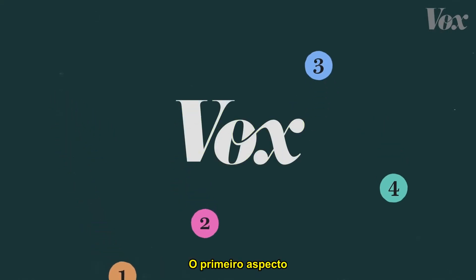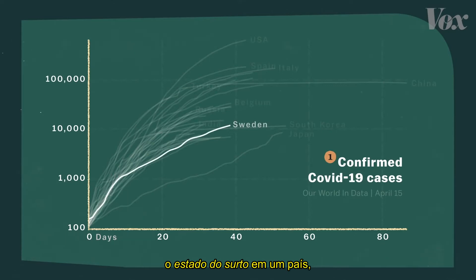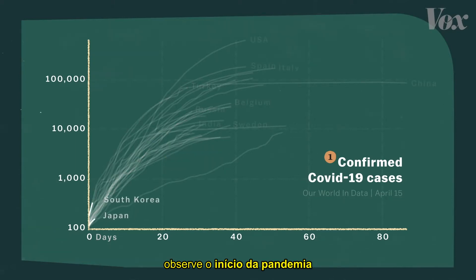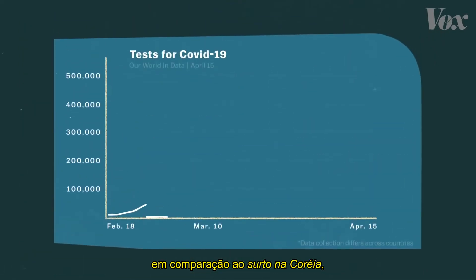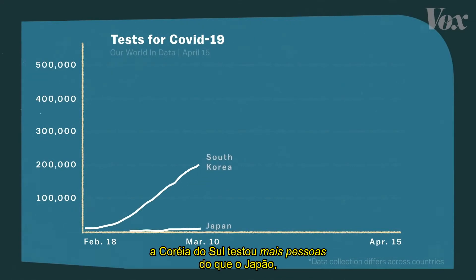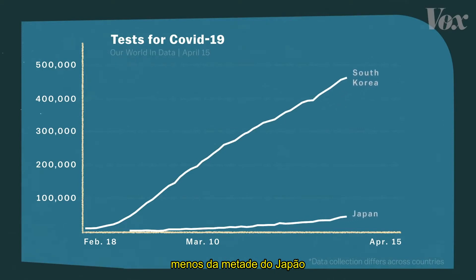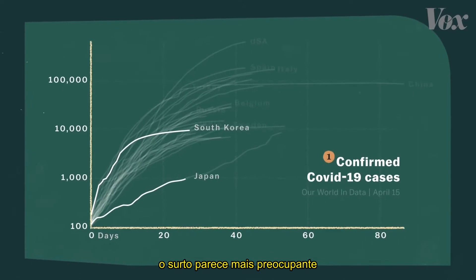First, this is not a chart of all coronavirus cases. It's only showing us confirmed cases. That means each line doesn't just reflect the state of the outbreak in a country, but also how aggressively that country is testing people for the virus. Take a look at Japan and South Korea earlier in the pandemic. Japan's outbreak looked pretty small in comparison, but the available data on testing shows us that South Korea had tested vastly more people than Japan did, even though their population is less than half as big. And now, as Japan slowly increases their testing, the outbreak there looks more worrying.